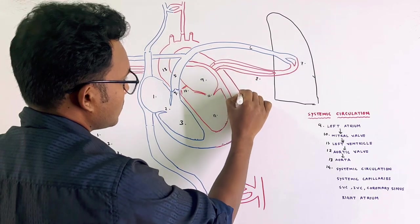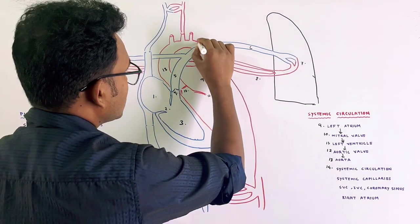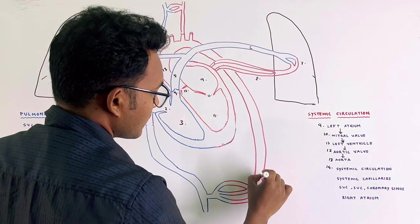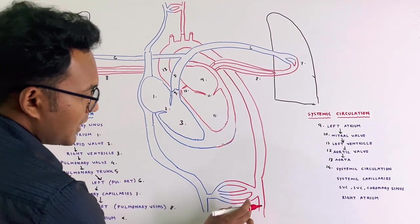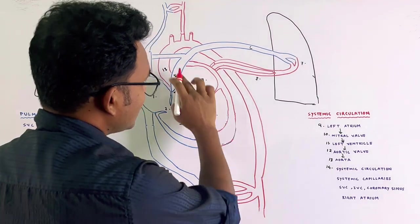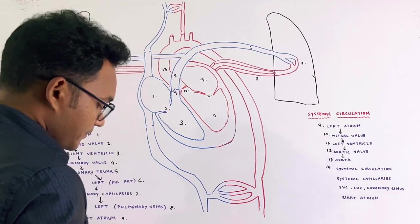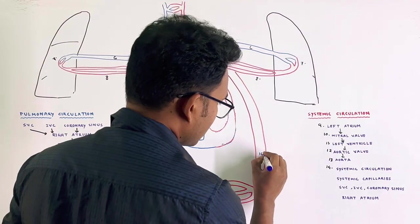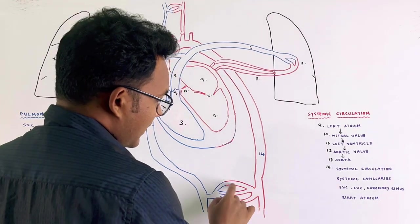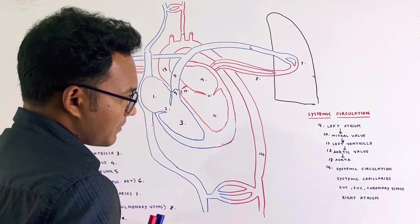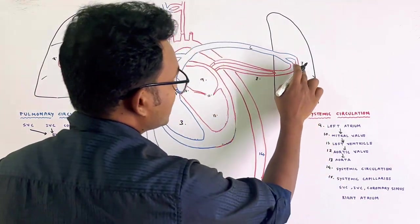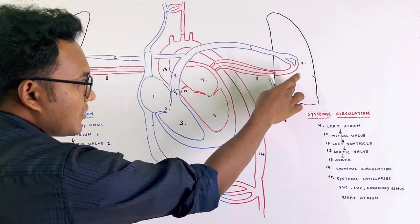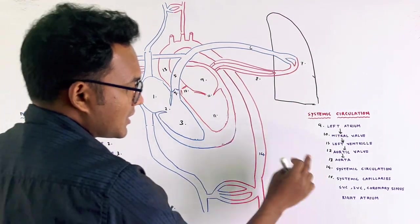This is systemic circulation. The systemic circulation carries oxygenated blood from the left ventricle through the aorta to the body. The oxygenated blood reaches the systemic capillaries throughout the body, where gas exchange occurs.